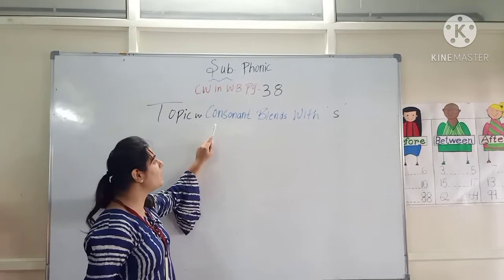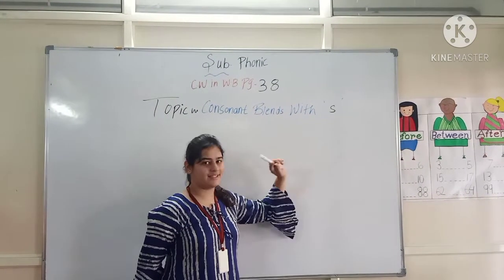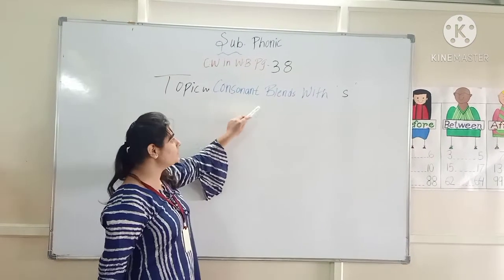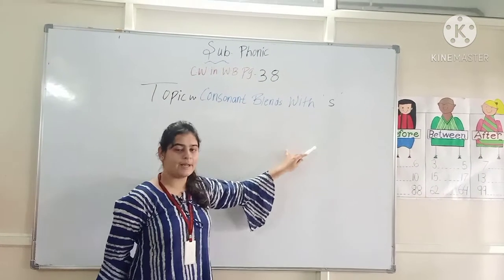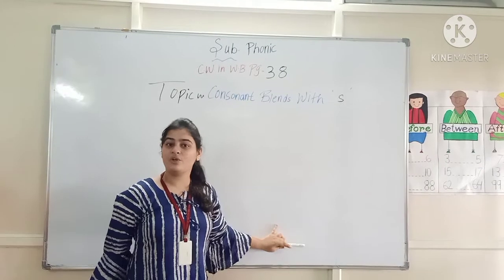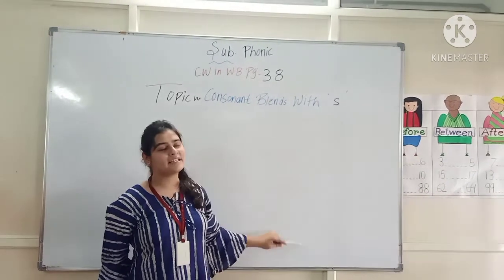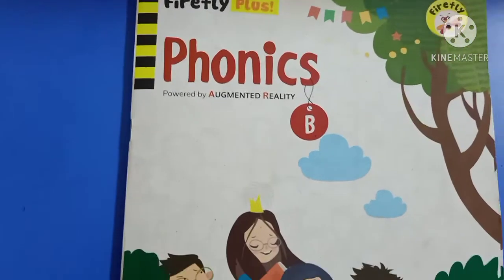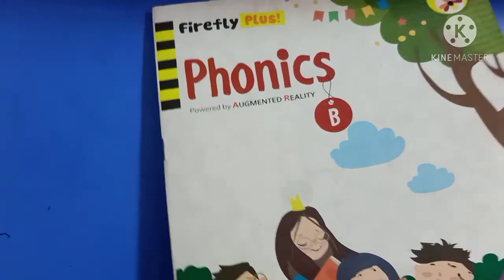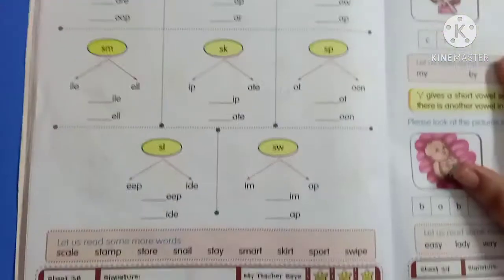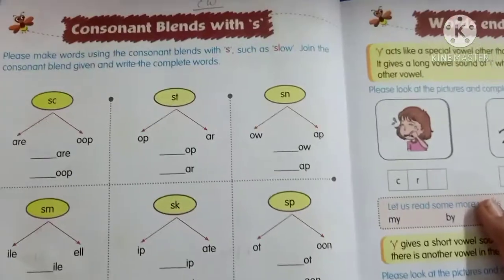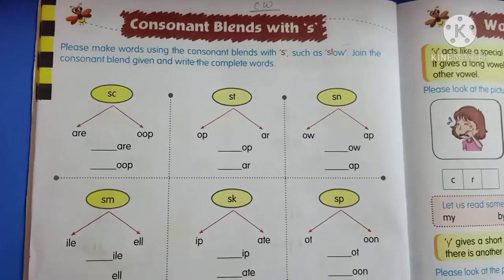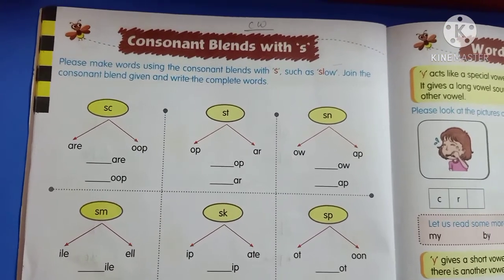And today's topic is consonant blends with S. We need to know the page number 38 — consonant blends with S. Now kids, take this book Phonics B and open page number 38. This is your classwork page number — consonant blends with S.